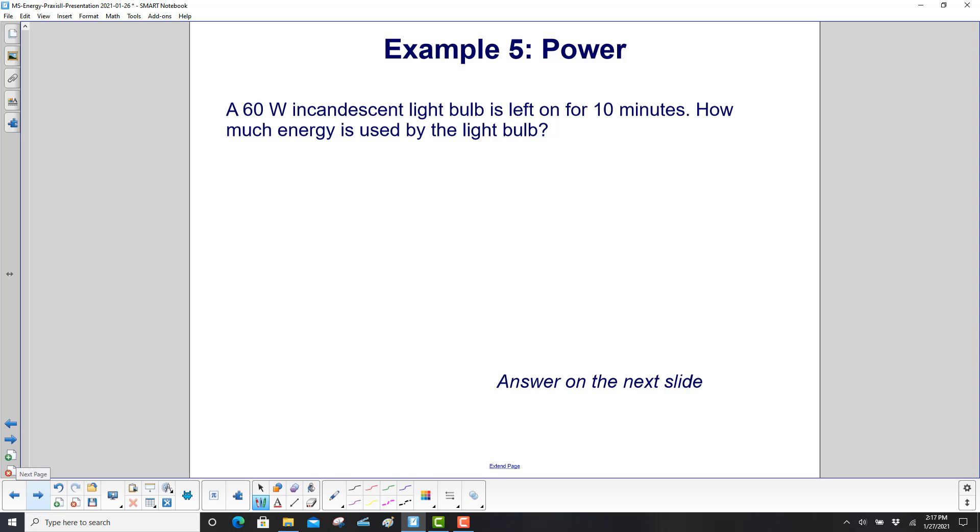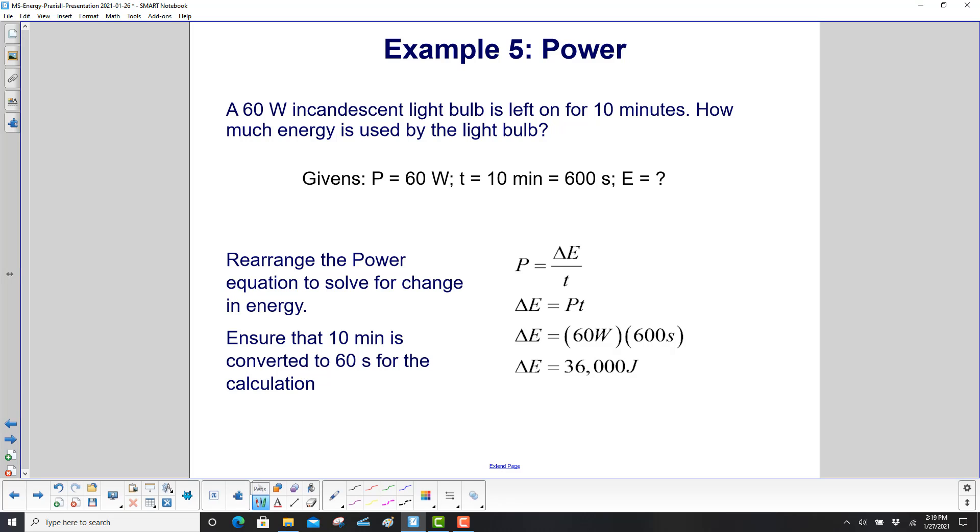A 60 watt incandescent light bulb is left on for 10 minutes. How much energy is used by the light bulb? We start with our givens, 60 watts, time of 10 minutes, but we don't use minutes in physics problems. We use seconds. So if one minute has 60 seconds, 10 minutes has 600 seconds, and we want to find the energy. So power is energy over time. We want to rearrange that, so we solve for energy. So delta E energy is power times time. The power, 60 watts times 600 seconds, and we get 36,000 joules.